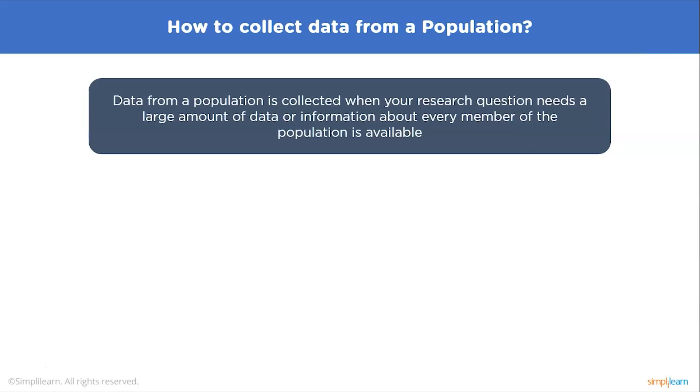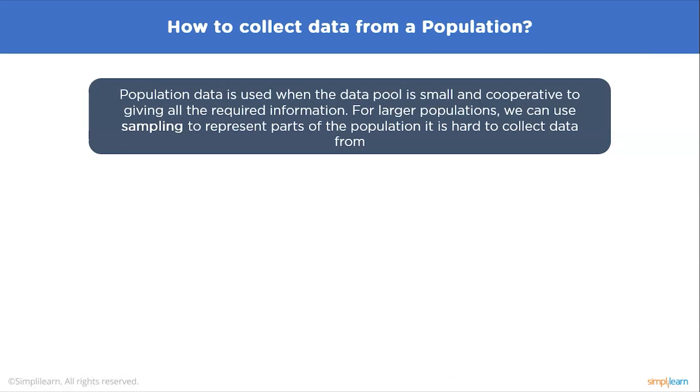Usually it's only straightforward to collect data from a whole population when it is small, accessible, and cooperative. Population data is used when the data pool is small and cooperative to giving all of the required data. For larger populations, we can use sampling to represent parts of the population it is hard to collect data from.